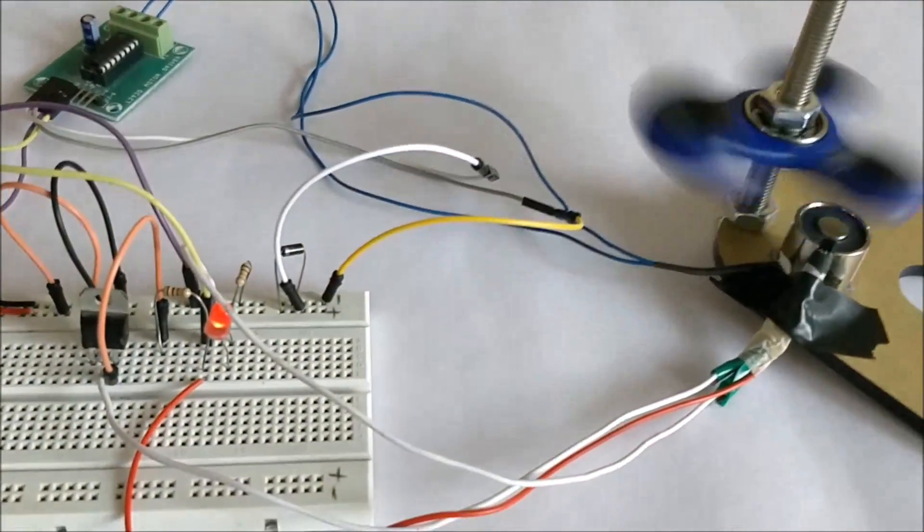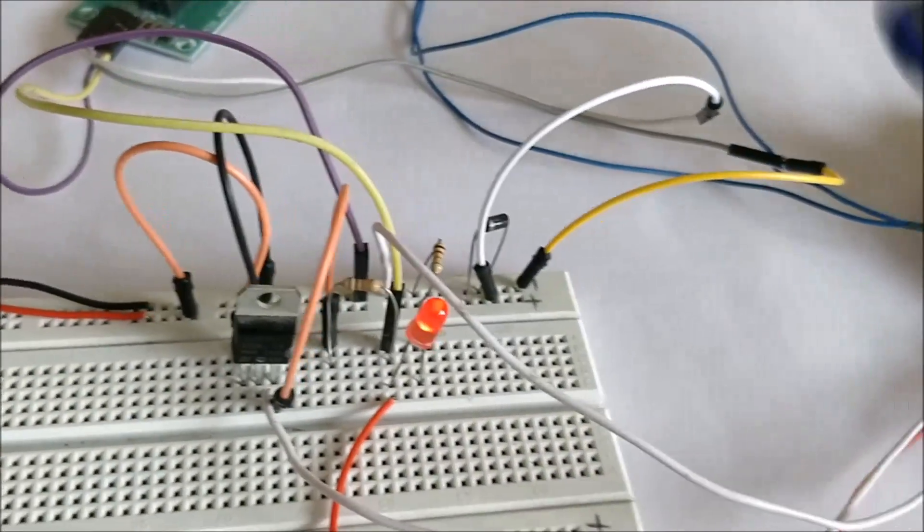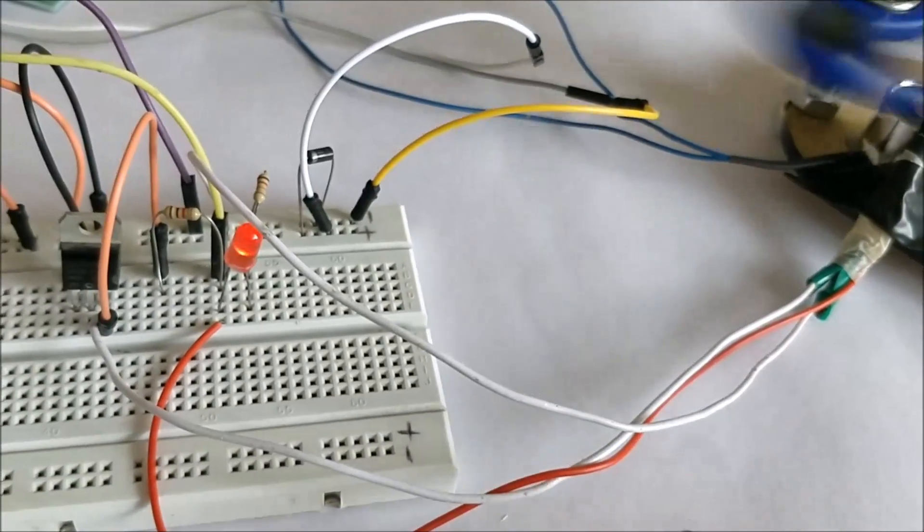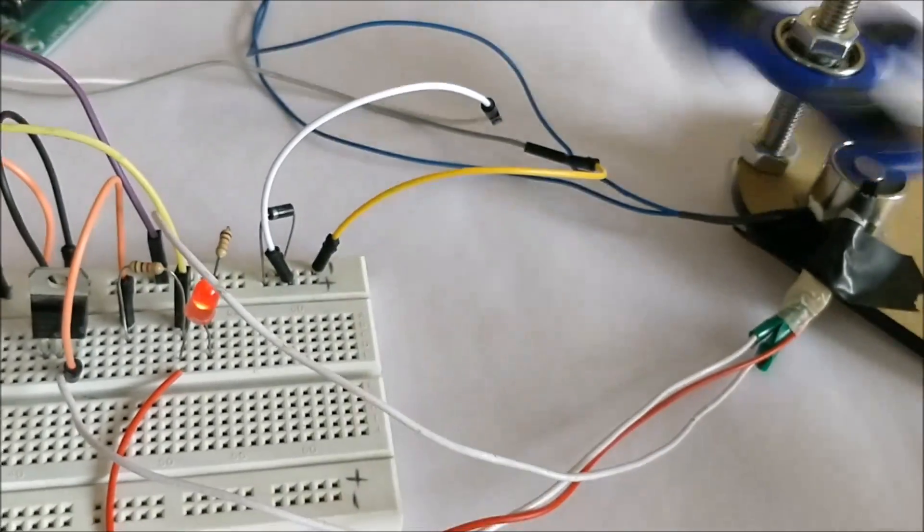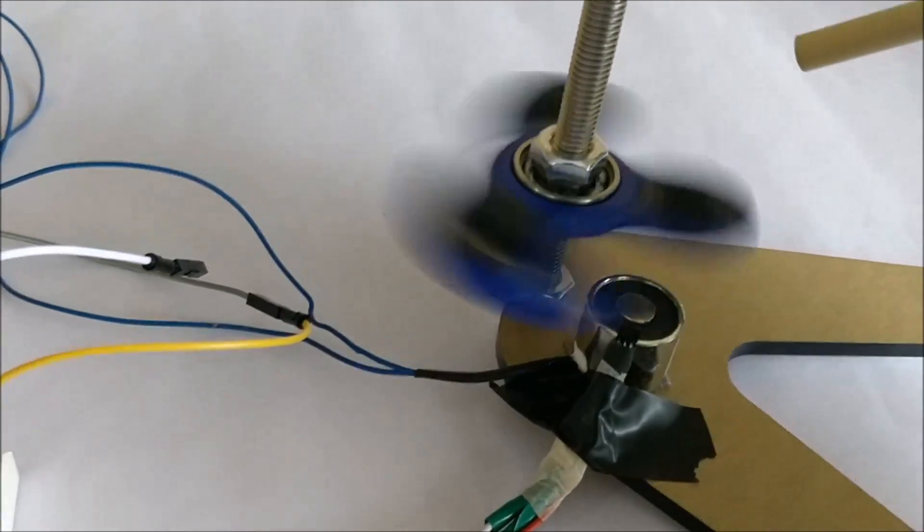So you can just give it an initial push and it will rotate forever. As you can see, this LED is blinking every time it detects a magnet. So this LED is actually connected with this hall effect sensor, so every time it detects the magnet the LED is blinking.